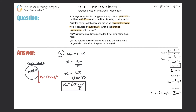That takes care of Part A. Now Part B: what is the angular velocity after 0.75 seconds if it starts from rest? When thinking about this, it helps to treat the equations for rotational kinematics as analogs to linear kinematics. We know the angular acceleration — 600 rad/s² — and the time is 0.750 seconds. Since it starts from rest, the initial angular velocity is zero.